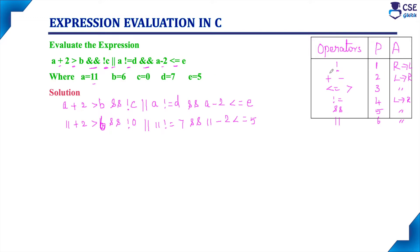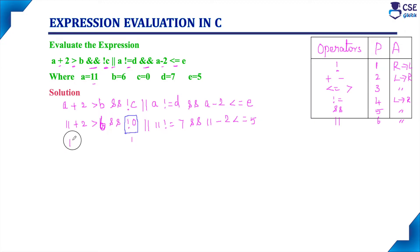First, we apply the highest priority operator, which is the unary NOT operator. NOT of 0 equals 1, and NOT of 1 equals 0. So here, NOT of 0 gives 1, and the remaining expressions are written as-is.